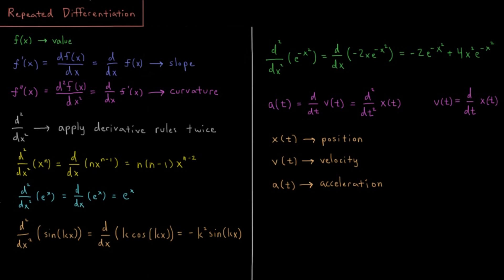This video will review repeated differentiation. So thus far we've looked at f, where we have some value — a function for a given input x. We have some output f, then we looked at the function f', the first derivative of x. That's equal to df/dx, some infinitesimal change in the function divided by some infinitesimal change in x, which is equal to the derivative operator acting on f — the slope of a tangent line at that given value of x.